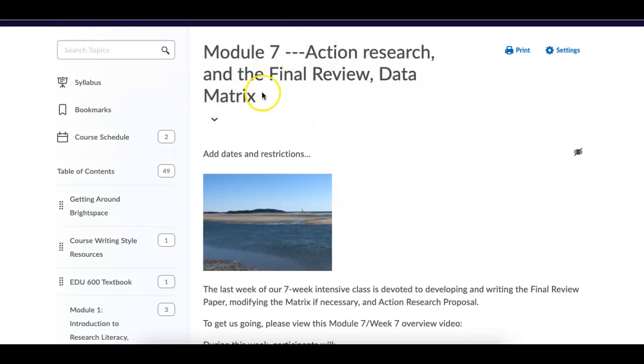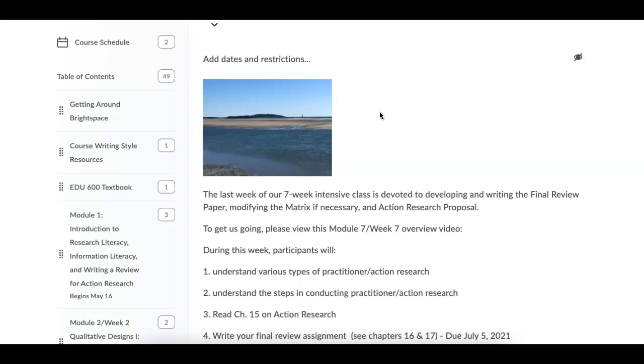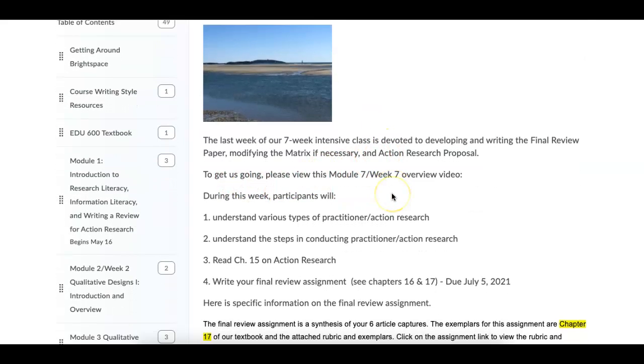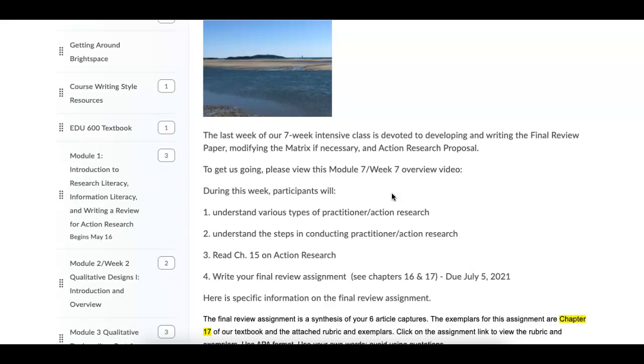So I've decided against that. The reason being, I really would like you to have the time in this last week to work on your final critique assignment, which is the final paper. I'll just go through some of the things to do this week. As you can see, I'm in Module 7, which is our last week of class. Even though I am not asking for any kind of discussion post by you this week, I'd like you to do a few things. The first thing would be to read Chapter 15 so you can understand the various types of practitioner and action research and what are the steps in conducting this type of research.